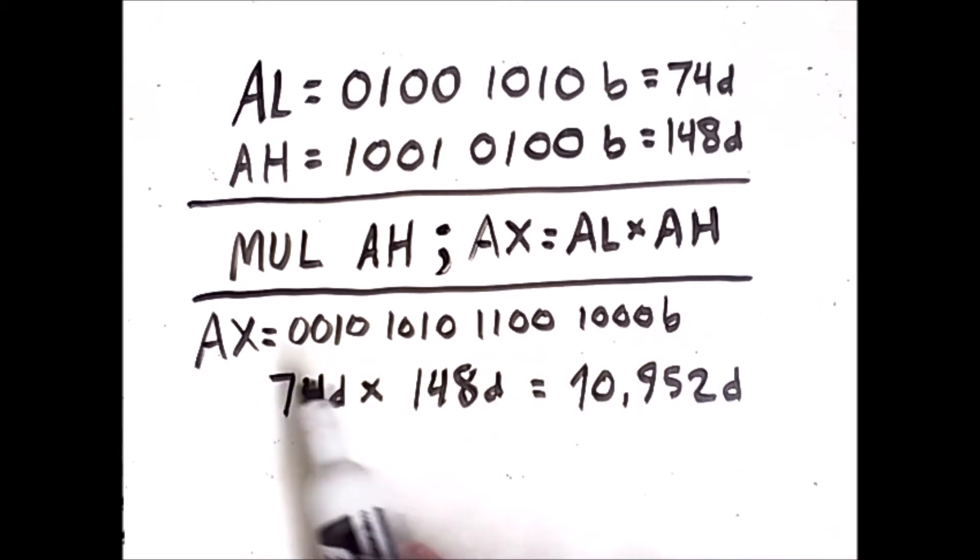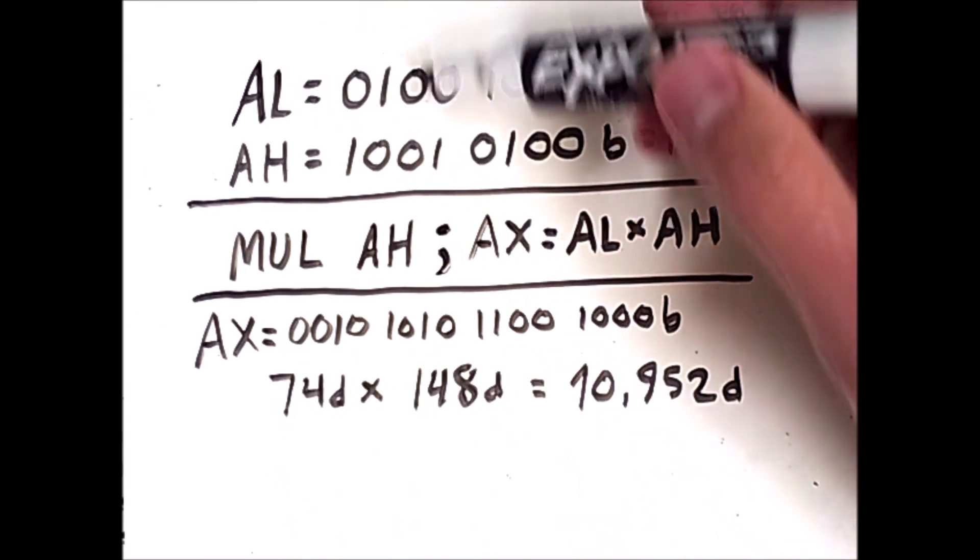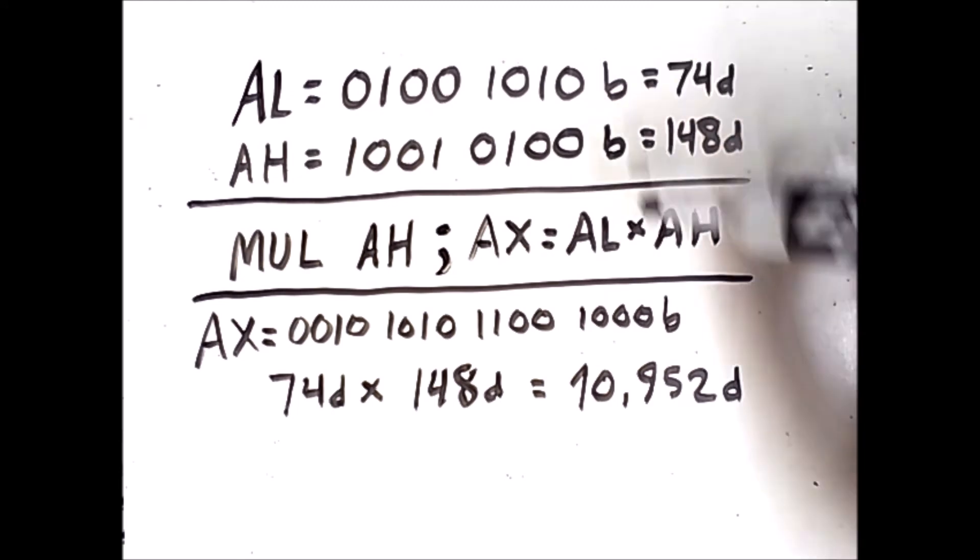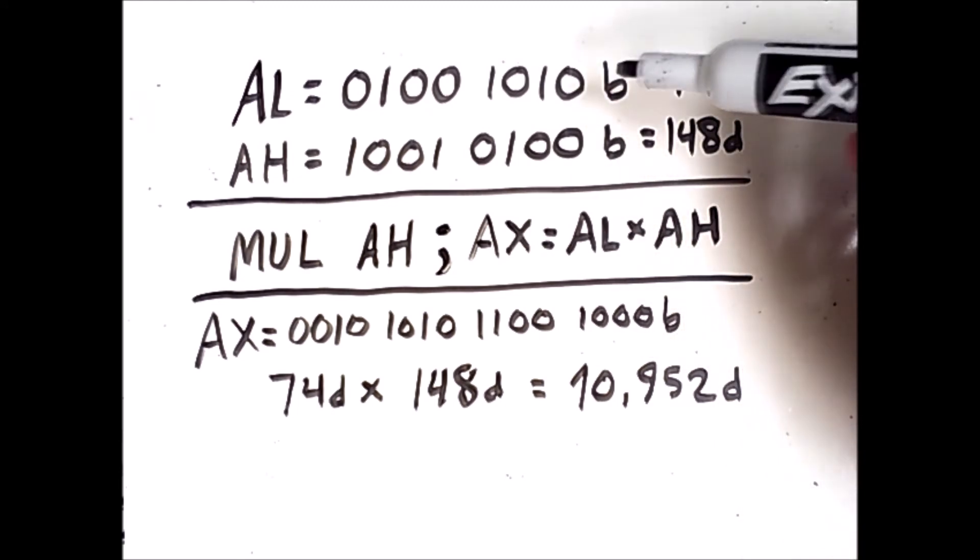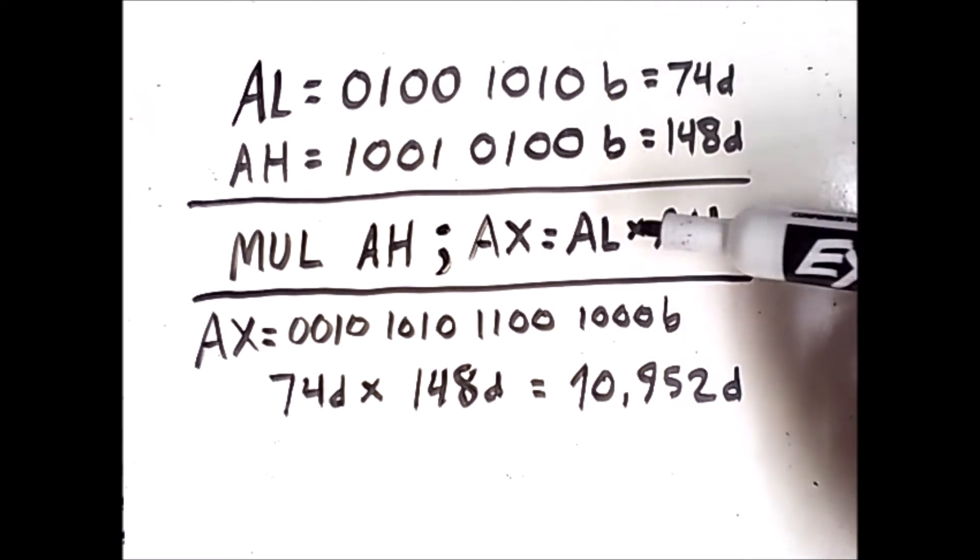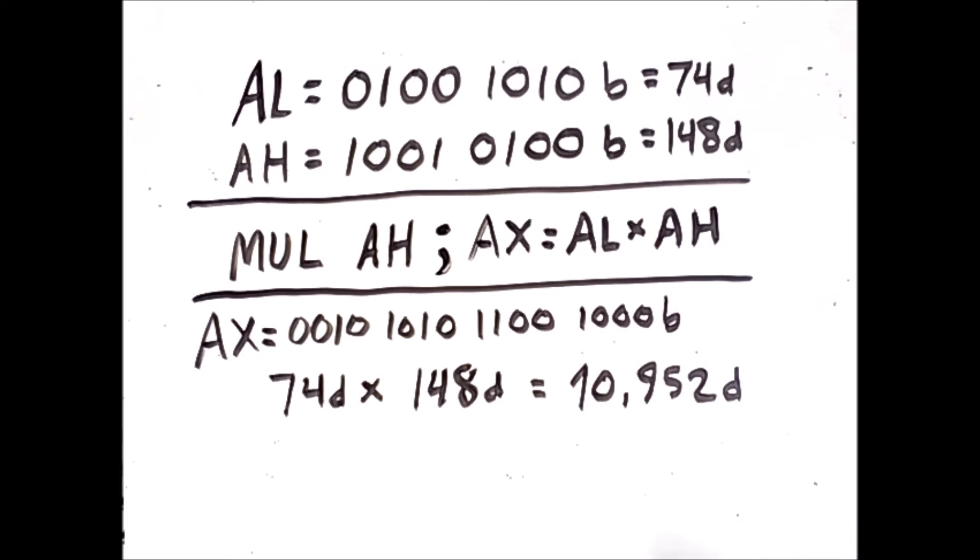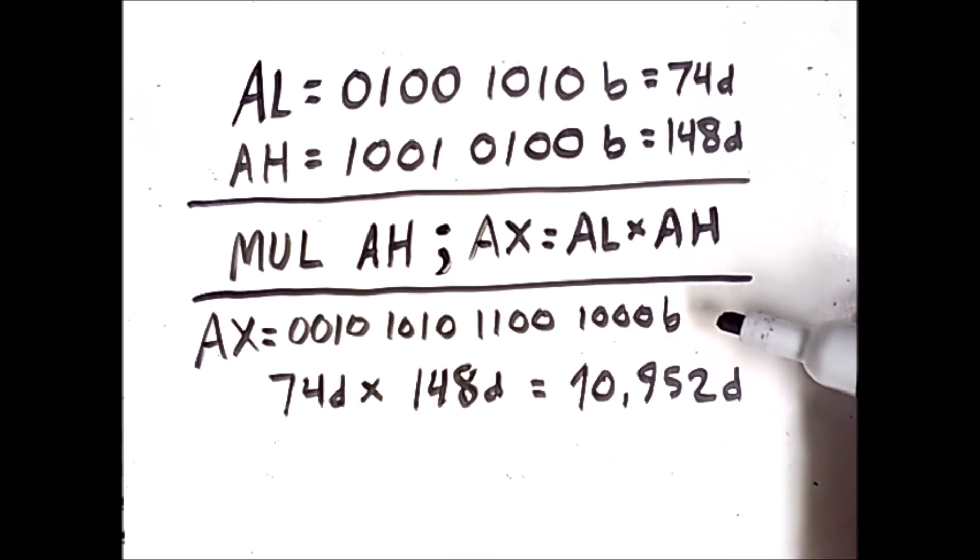Now notice that we have 16 bits here, whereas these two registers only have 8 bits each. These registers store different numbers of bits, and we will get into the details of what these registers can store in a later lesson. For now, all you need to know is that I do this multiplication, and the result is stored here.